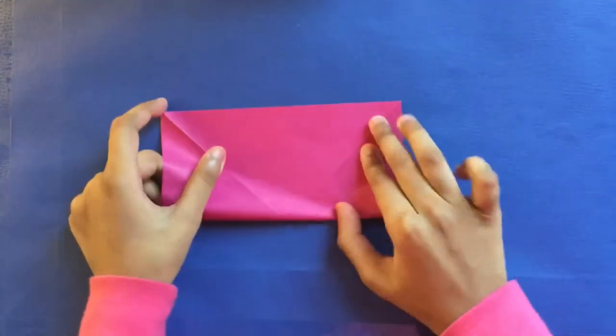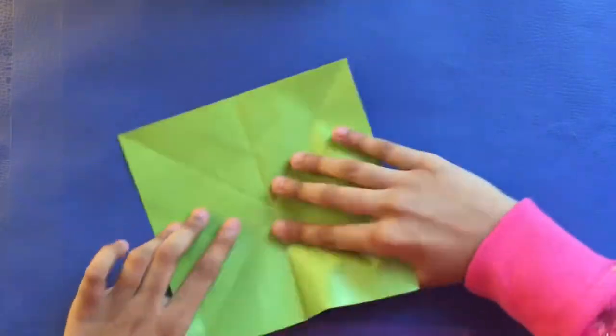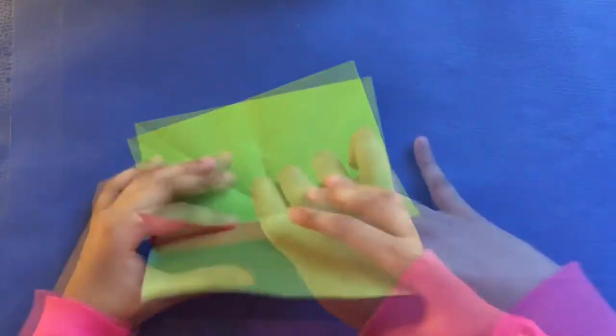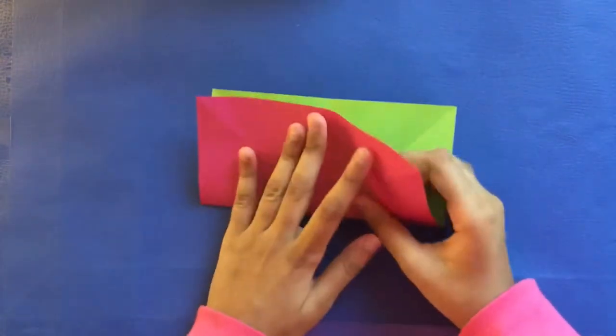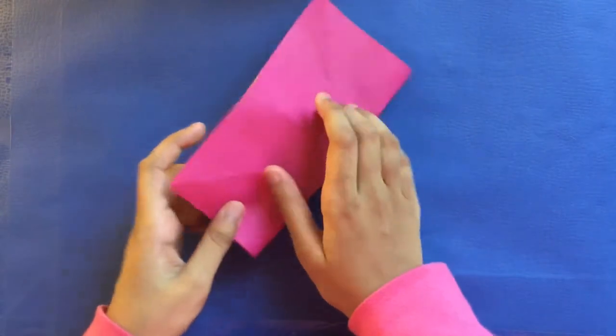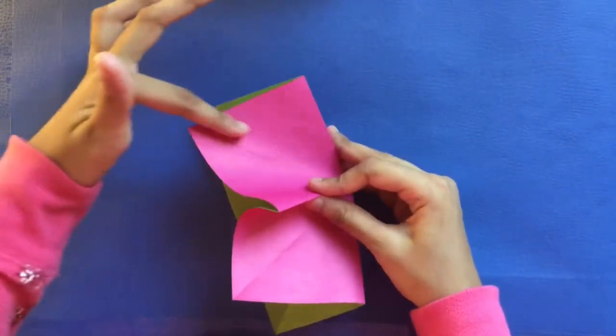Fold in half. Now my new method of making a square base is make this fold and make this mountain fold and make this crease.